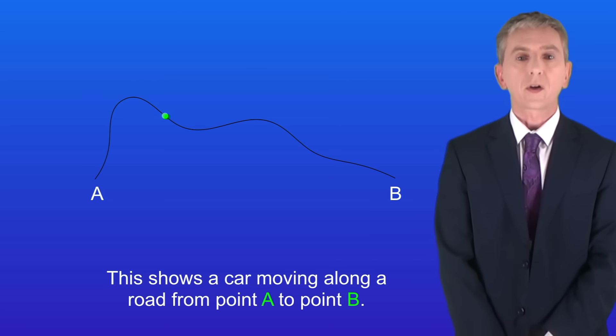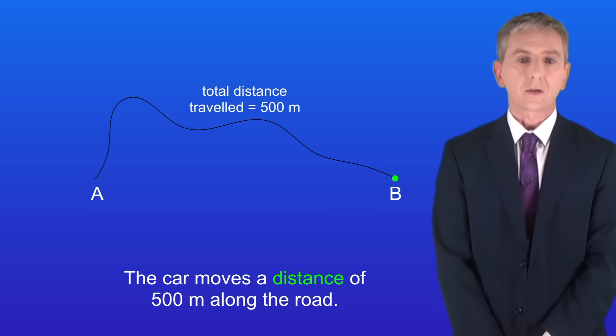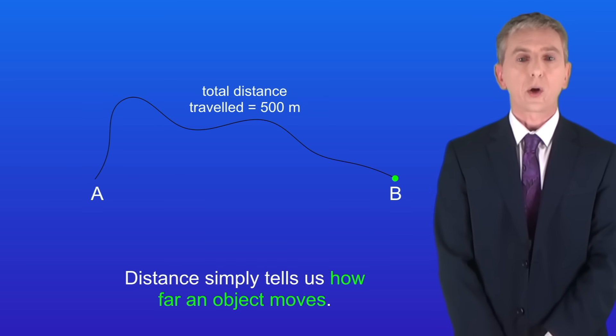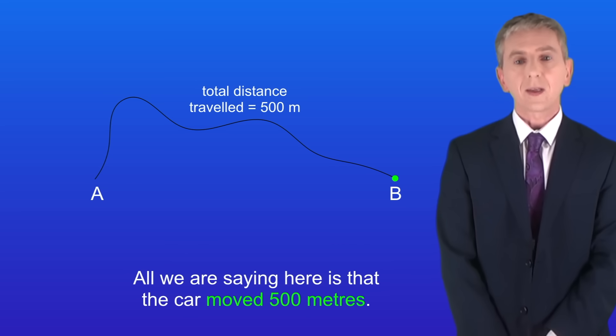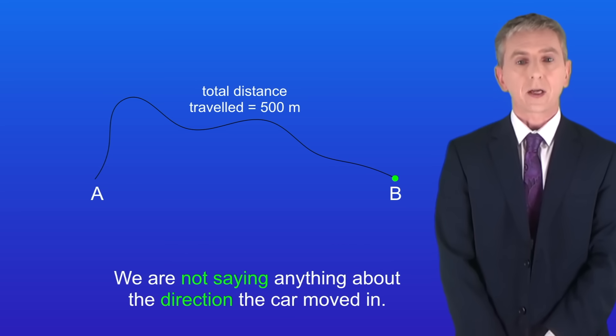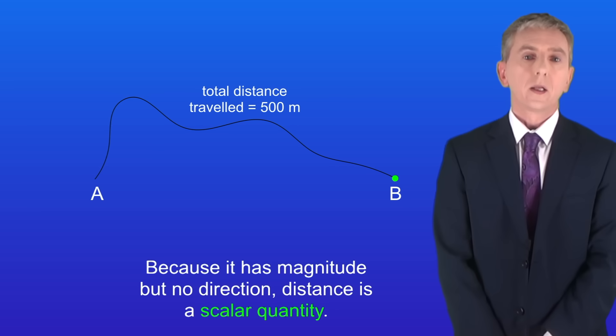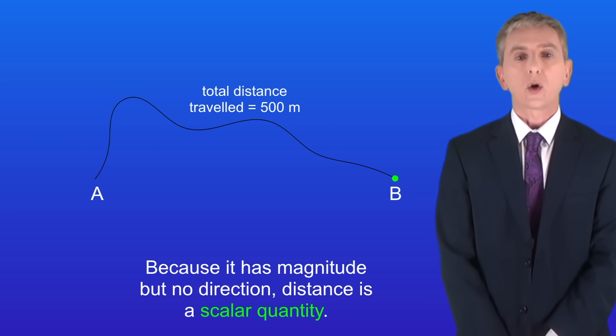I'm showing you a car moving along a road from point A to point B. The car moves a distance of 500 meters along the road. Now this brings us to a key point about distance. Distance simply tells us how far an object moves. Distance does not involve direction. So all we're saying here is that the car moved 500 meters, not saying anything about the direction the car moved in. So because it's got magnitude but no direction, distance is a scalar quantity.